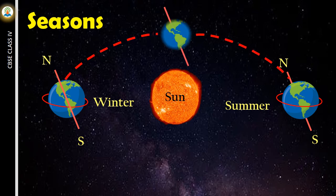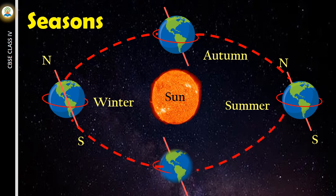In between summer and winter, we experience autumn. And in between winter and summer, we experience spring. After six months, the northern hemisphere is turned away from the sun and the days become shorter as less sunlight reaches here. It is winter season here.